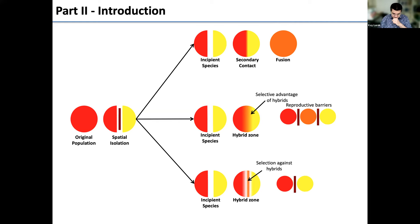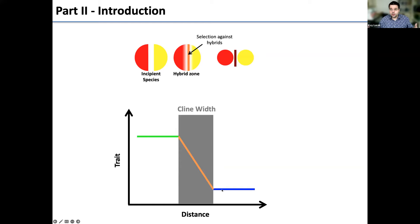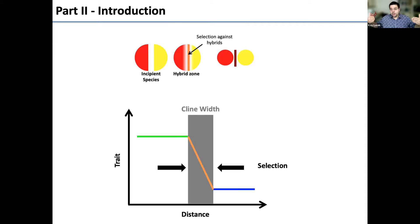Hybrid zones are often studied using cline analysis. Imagine two species — one green, one blue — and a trait or allele. You measure it going from one species to the other, and the width of the cline depends on the strength of selection: stronger selection produces a narrower cline.